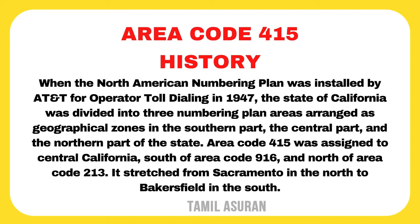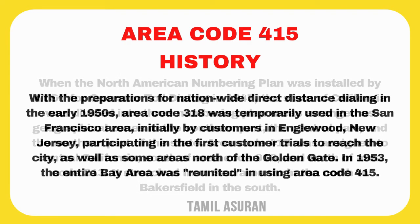state of California was divided into three numbering plan areas arranged as geographical zones: the southern part, the central part, and the northern part of the state. Area code 415 was assigned to central California, south of area code 916 and north of area code 213, stretching from Sacramento in the north to Bakersfield in the south.